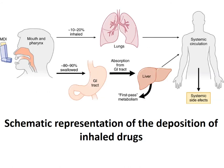The MDI — metered dose inhaler — is a well-known device. It must be administered through the oral route, not the nasal route. When the patient inhales and simultaneously presses the MDI, there must be synchronization of inhalation and actuation. This enables entry of up to 20 percent of the drug directly into the lungs, while the remaining 80 to 90 percent reaches the GI tract and gets absorbed. The acute effect is due to the 20 percent that directly deposits at the target sites.